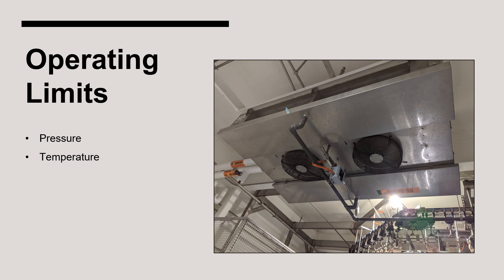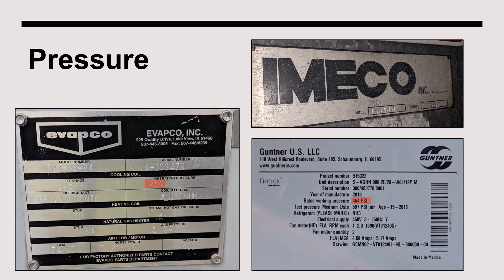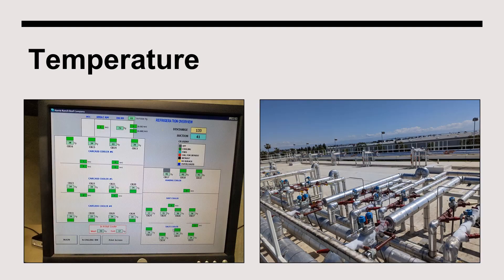The two most relevant operating limits for air cooling evaporators are pressure and temperature. The maximum working pressure of an air cooling evaporator should be displayed on the nameplate, and under no circumstances can the pressure inside the unit exceed this value. Since evaporators are on the low side of the system, this pressure should never be approached during normal operation. For air cooling evaporators, the high and low temperature limits will be an important parameter that facility operators monitor daily. Each system will have unique limits which vary based on the products being refrigerated.